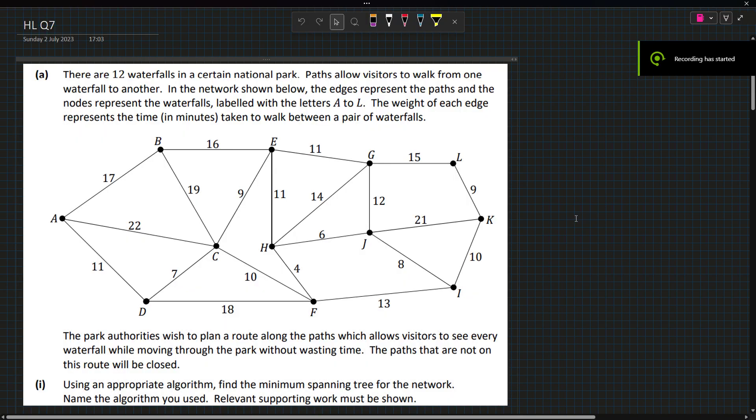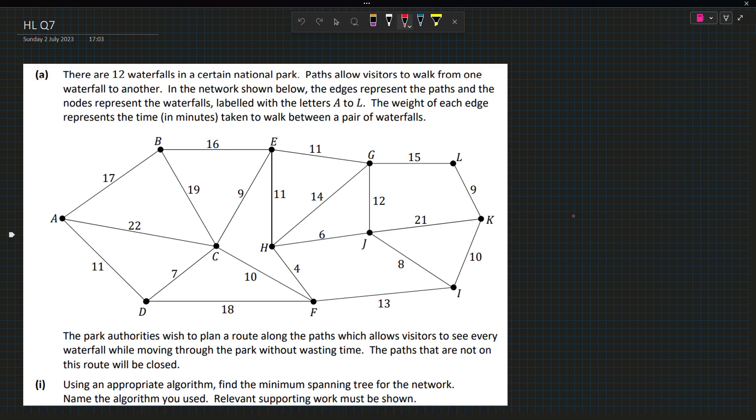Question seven in the higher level applied math paper starts off as a graph theory question involving some waterfalls. We have to find the minimum tree for the network.